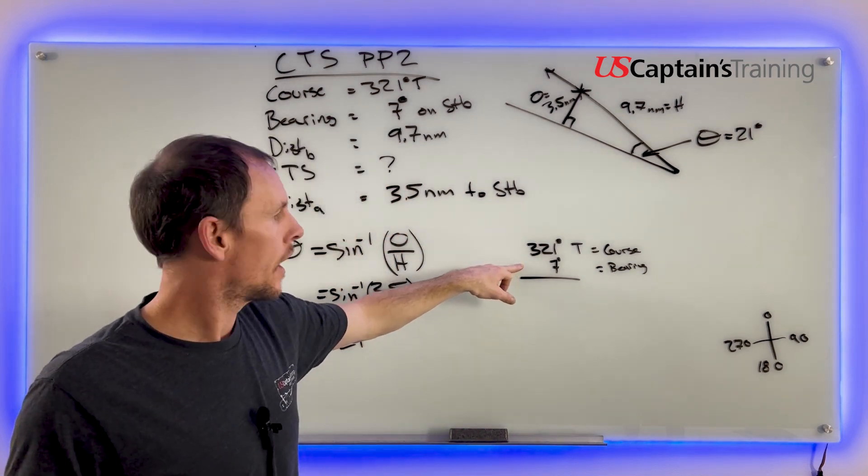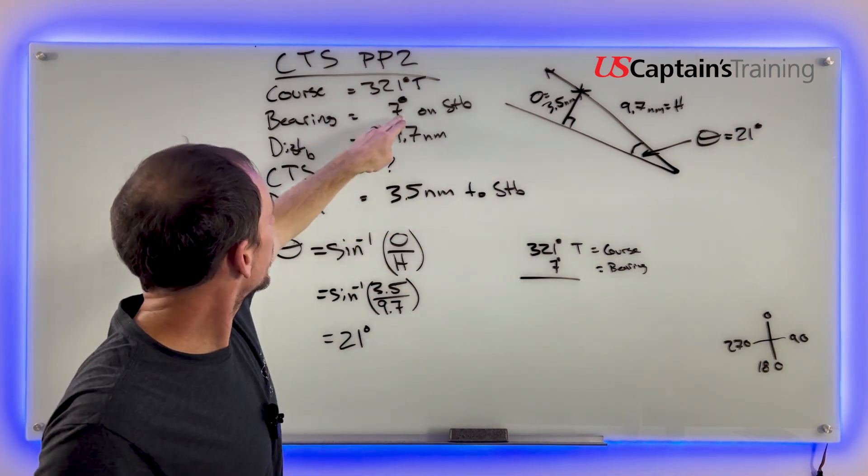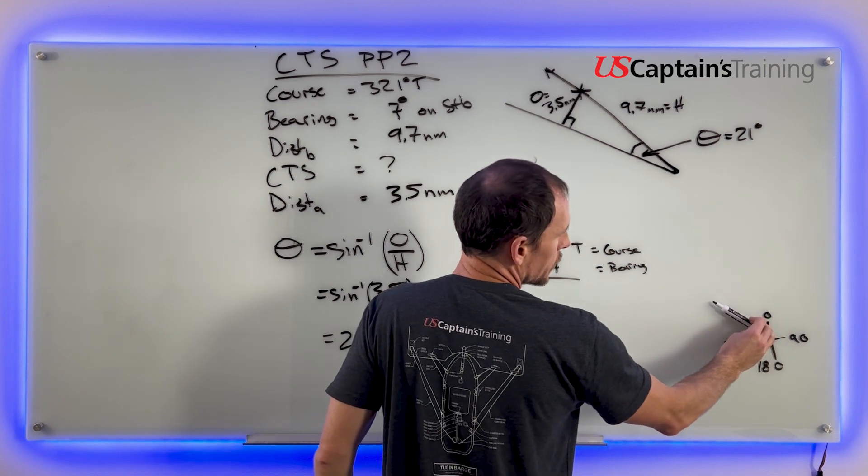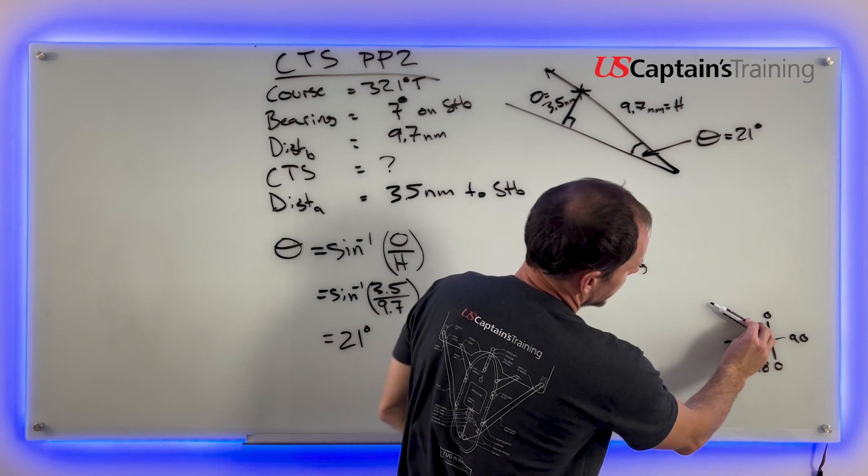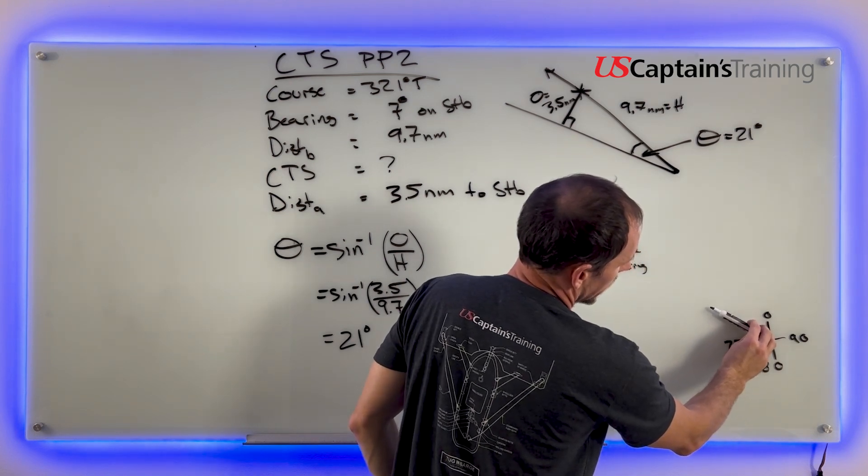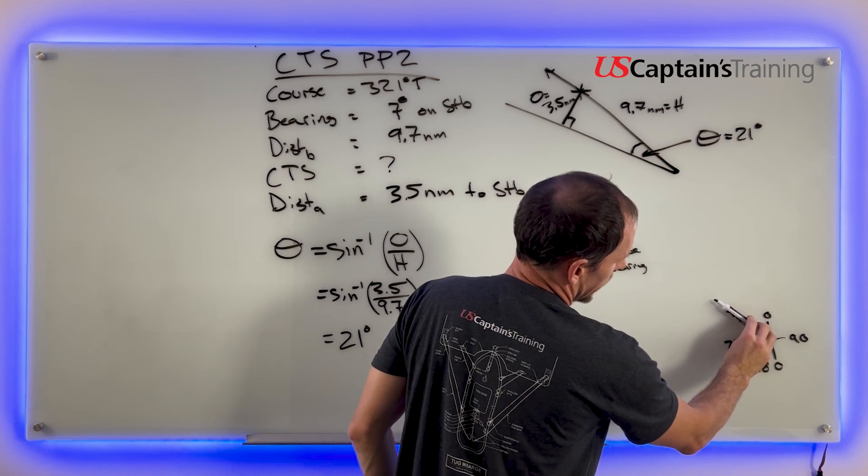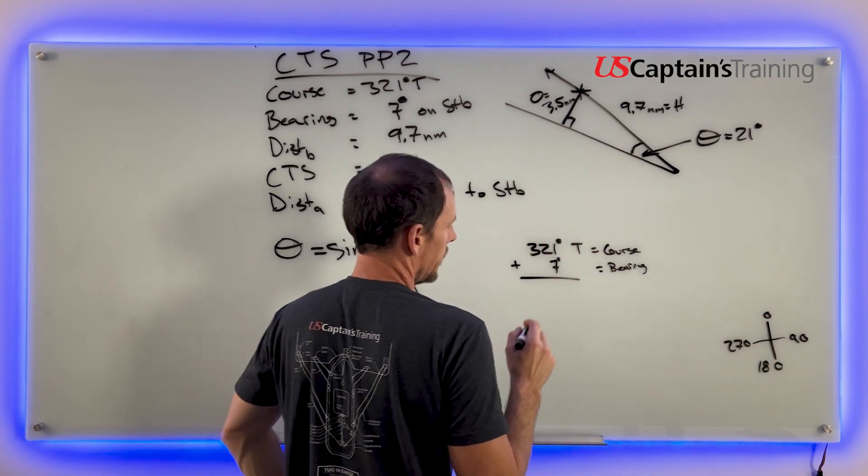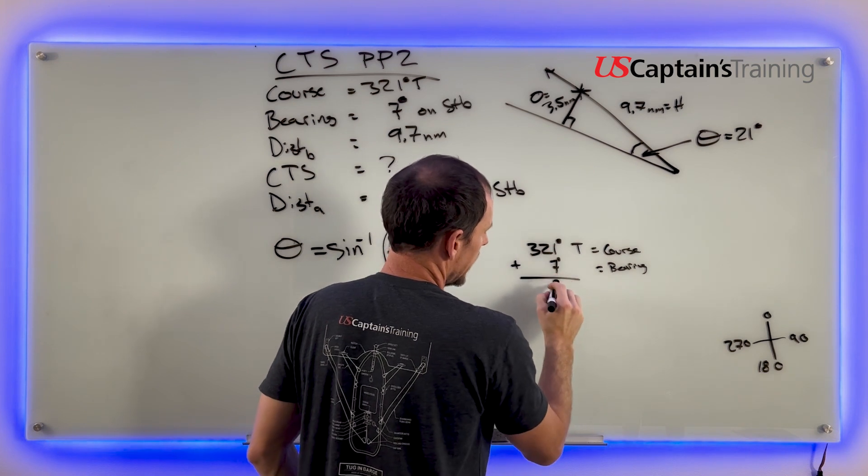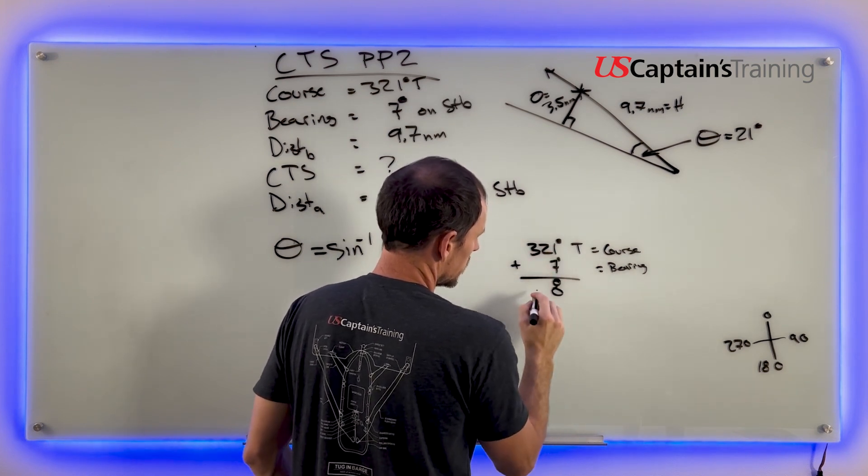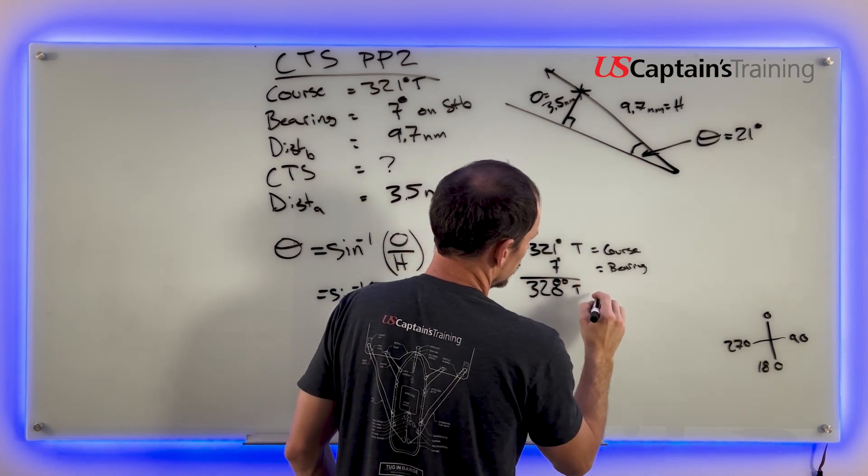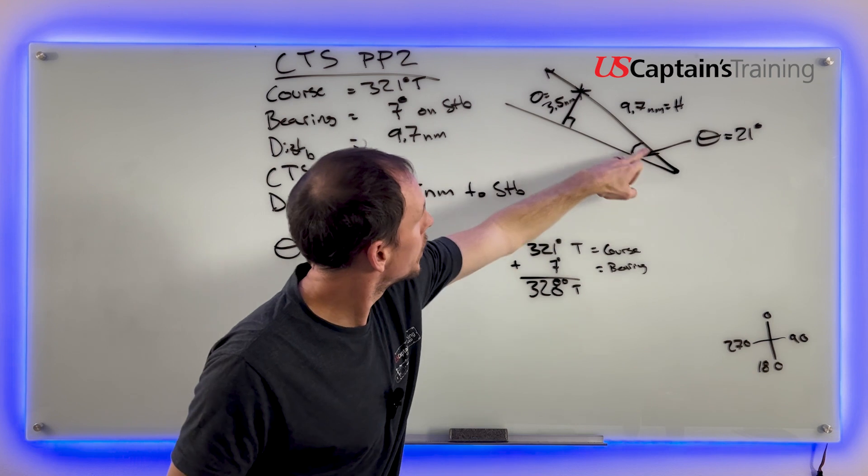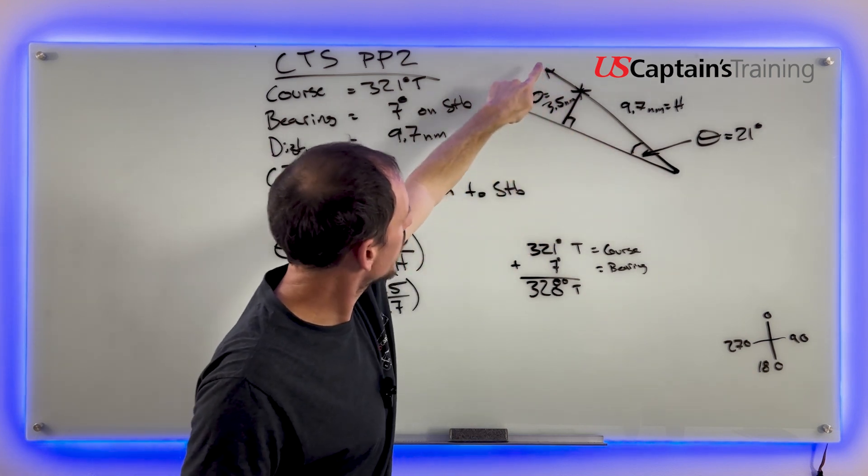Do we add or subtract this bearing? We're 321 and we see 7 degrees on our starboard. If we're 321, 7 degrees on our starboard side, we need to turn toward it. When we turn that way, what are we doing? We're getting closer to 360. From 270 to 360, we're going to add. We're going to add that 7. 321 plus 7 is 328 degrees true. That is going to be this line towards our bearing. This would be 328.